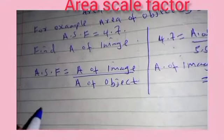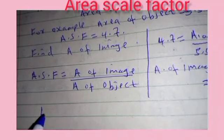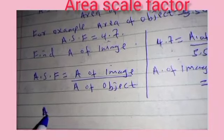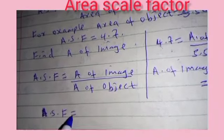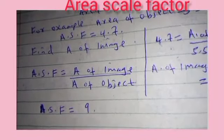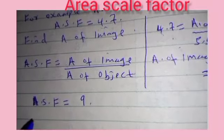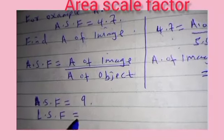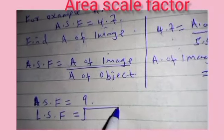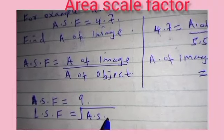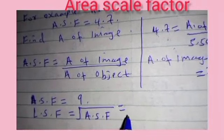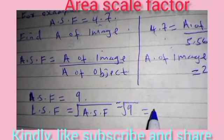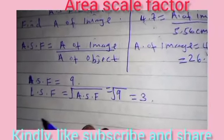Now in the case where you are given the area scale factor and you need the linear scale factor: linear scale factor is found by getting the square root of the area scale factor. For example, if the area scale factor is 9, then the linear scale factor equals the square root of 9, which equals 3.